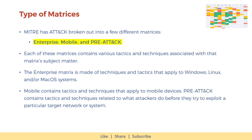MITRE has ATT&CK broken out into a few different matrices: enterprise, mobile, and pre-attack. Each of these matrices contains various tactics and techniques associated with that matrix's subject matter. The enterprise matrix is made of techniques and tactics that apply to Windows, Linux, and macOS systems. Mobile contains tactics and techniques that apply to mobile devices. Pre-attack contains tactics and techniques related to what attackers do before they try to exploit a particular target network or system.